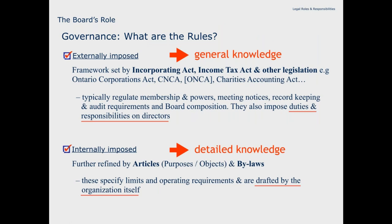You will be getting a copy of these slides and can look up the reference to the Canadian Society of Association Executives. To revert: externally, you're expected to have a general knowledge, a briefing on the acts and legislation that affect you. And internally, you have the articles and the bylaws, of which you should have absolutely detailed knowledge. After all, the organisation wrote them. If you're on the board, you're responsible for them. And if you don't like them, you can change them. So two sources, three levels: legislation, articles, bylaws. This is the framework of the rules under which you deal with issues of governance.